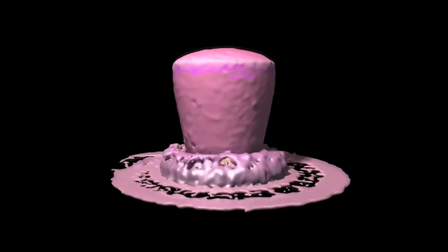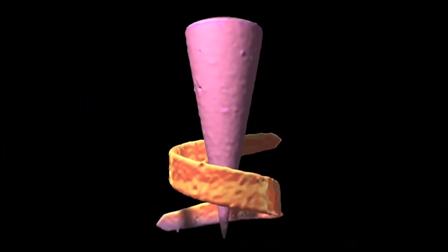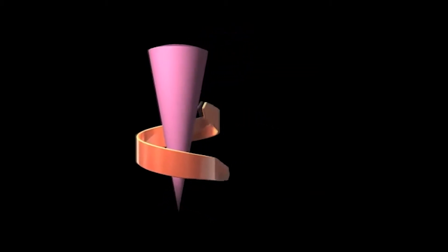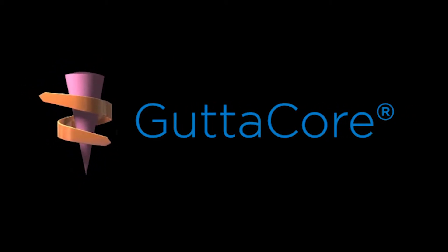What if there was a way to turn warm, flowable Guttapercha into an easy-to-remove obturator core? Cross-linking technology makes it possible. Introducing Guttapercha Core Obturators, because it's what's inside that counts.